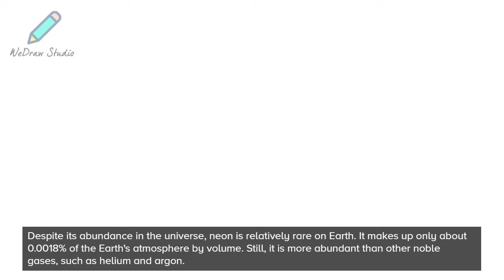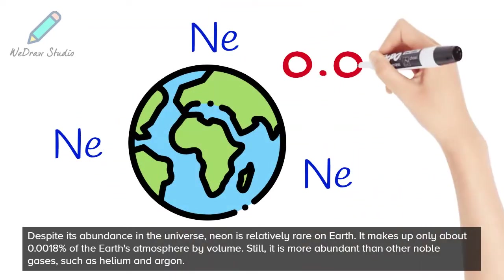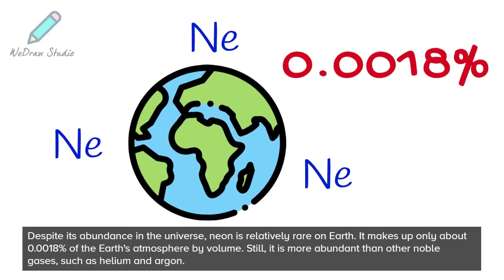Despite its abundance in the universe, neon is relatively rare on Earth. It makes up only about 0.0018% of the Earth's atmosphere by volume. Still, it is more abundant than other noble gases, such as helium and argon.